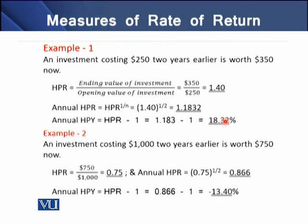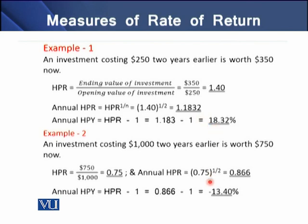In another example, an investment costing $1,000 two years earlier is now worth $750. The holding period return is 0.75, and the annualized holding period return comes to 0.866. The annualized holding period yield is negative 13.40 percent. In the first example, the holding period return greater than 1 shows an increase in wealth of 18.32 percent, while in the second example, the holding period return less than 1 shows a loss of 13.40 percent.